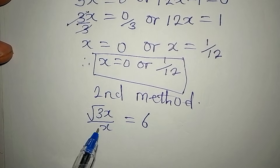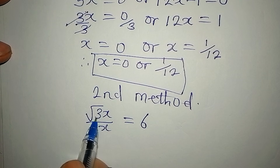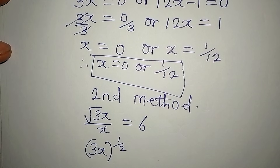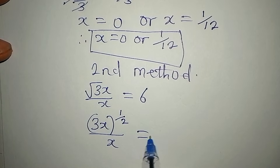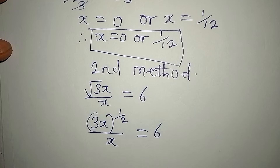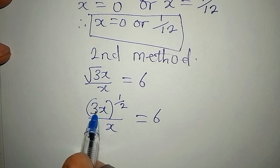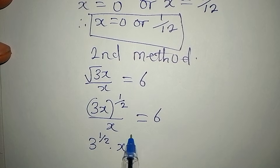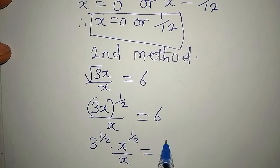Now I'll apply one of the laws of indices. The square root of 3x means 3x to the power of 1/2, all over x, equals 6. I can separate this as 3 to the power of 1/2 multiplied by x to the power of 1/2, all over x, equals 6.